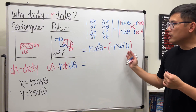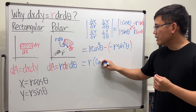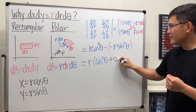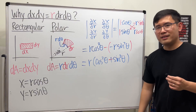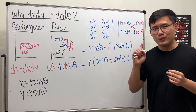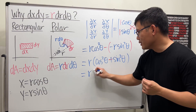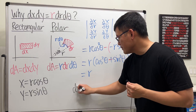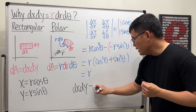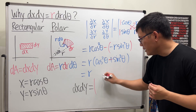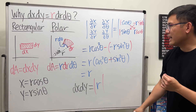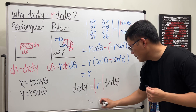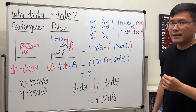Both terms have r, so we factor that out: r(cos²θ + sin²θ) = r · 1 = r. This is just equal to r. It's already positive, so you don't really need the absolute value, but we apply it anyway. Therefore dy dx equals the absolute value of the Jacobian times dr dθ, which is simply r dr dθ.